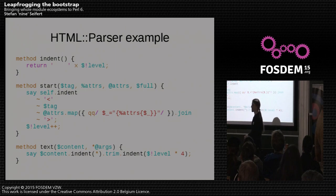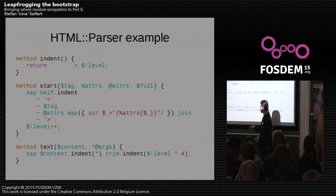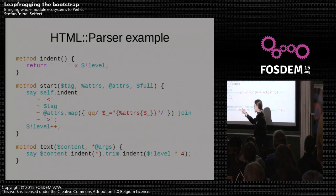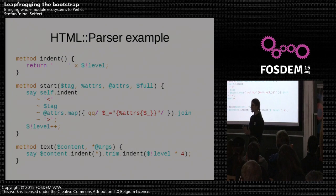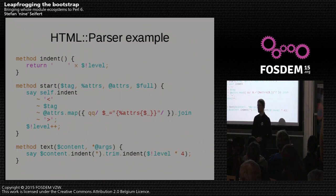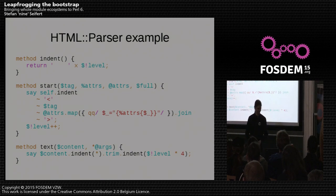Here we see one of my favorite Perl 6 features: strings like content have an 'indent' method that can dedent as much as possible and then indent again. I've done this before in Perl 5 using regular expressions and it took me about 20 tries to get it right. Here it's just a provided method.